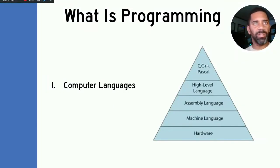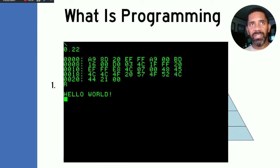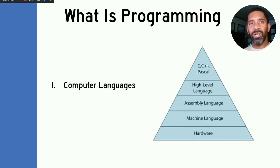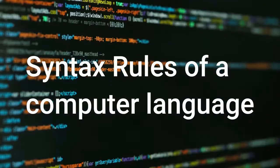So what is a computer language? Computer languages are basically the languages that a machine understands. Just as we understand English, French, Spanish, and so on, a computer language is a way of writing code for the computer to understand. Those codes follow rules — each language has its own rules, just like our spoken languages. We call those rules syntax. We'll get into more of that in another video, but let's keep it simple for now.